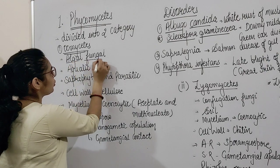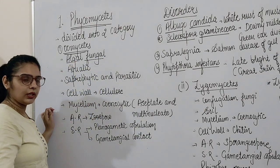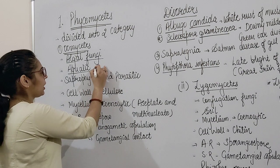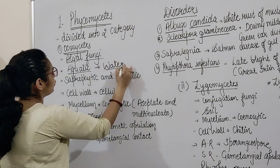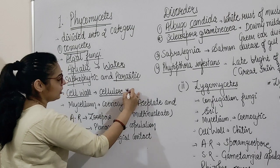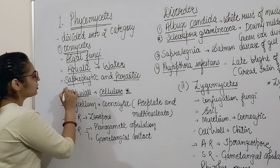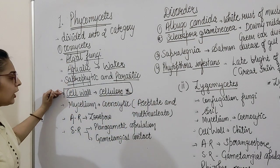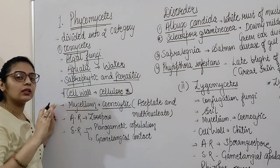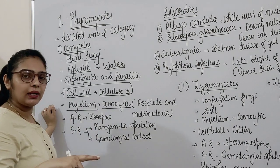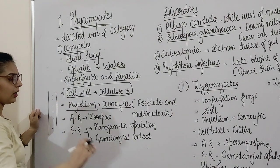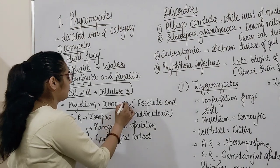The first category is Oomycetes, also known as algal fungi. It is aquatic — aquatic means water. Mode of nutrition is saprophytic and parasitic. Cell wall is made up of cellulose — this is an exception because fungi's cell wall is normally made up of chitin. Regarding the mycelium, septa is not present; it is aseptate, meaning it is multinucleate. This condition is called coenocytic.